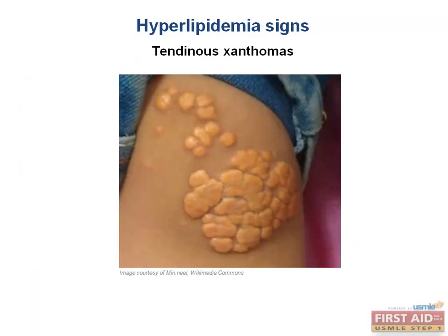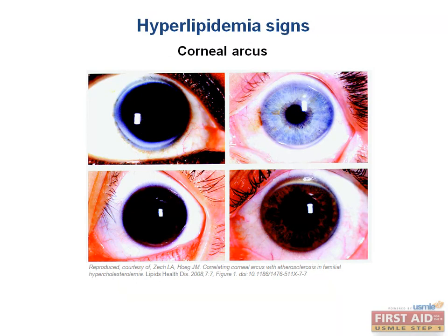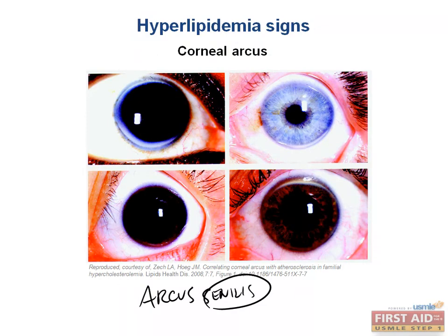A tendinous xanthoma shows accumulation in the tendon, eventually visible through the skin. You can also see a corneal arcus — deposition of LDL in the corneal margin, creating a blue ring around the colored part of the eye. In a young person, this suggests hypercholesterolemia from a genetic condition. In an older person, it is called arcus senilis — arcus meaning arch, senilis meaning old — commonly seen in elderly patients who have had high cholesterol for a long period of time.